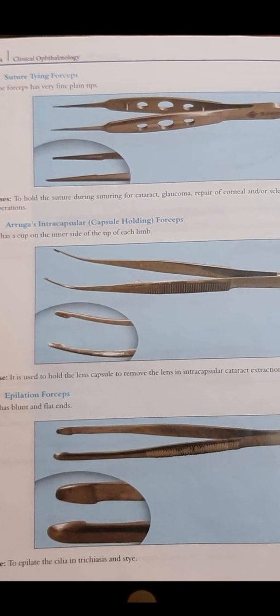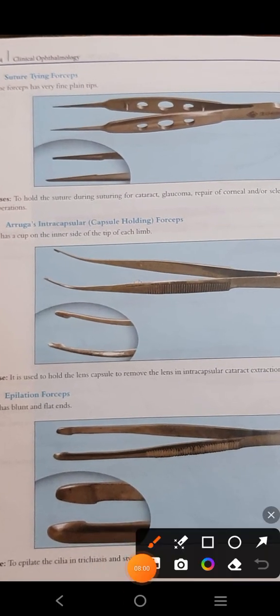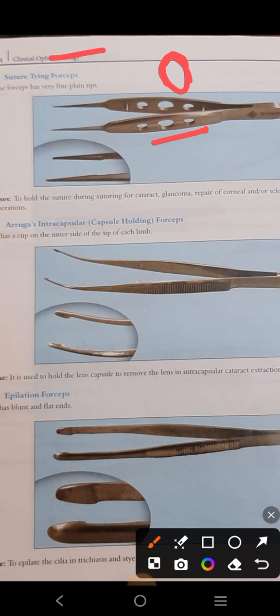The suture tying forceps — 'suture' also contains a U, which resembles O, so it also has openings in its limbs, but it has a very fine plain tip without the sharp teeth seen in the corneal forceps. As the name indicates, it is used to hold the suture during suturing procedures — whether in cataract surgery, glaucoma surgery, or any other operation where you need to hold the suture while tying it.